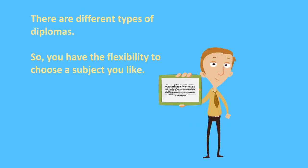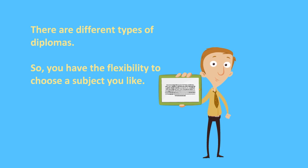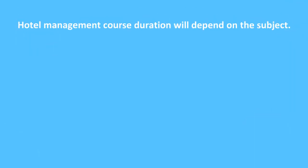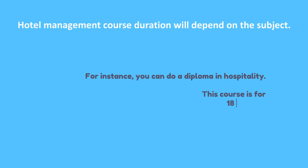There are different types of diplomas, so you have the flexibility to choose a subject you like. Hotel management course duration will depend on the subject. For instance, you can do a diploma in hospitality. This course is available for 18 months, 1 year, and 2 years.